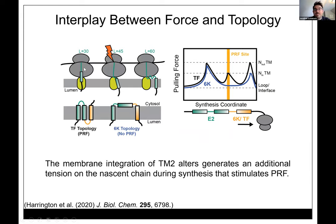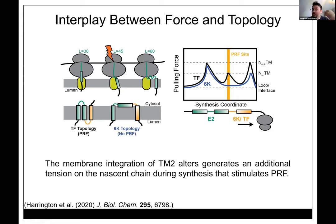Given the coarseness of this simulation, I was pretty surprised to see such a good correlation with our cellular data. Putting it together: the virus has evolved to have two topologies. TM2 is energetically frustrated — sometimes it doesn't engage the translocon at all, sometimes it does. When it does engage, we go from having two force spikes on the ribosome to three — and this third force spike coincides with the decoding of the slippery sequence in the RNA.